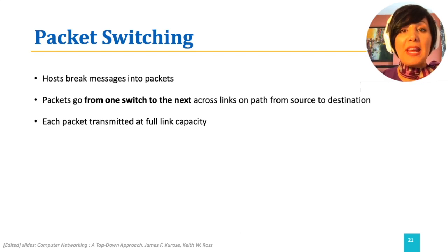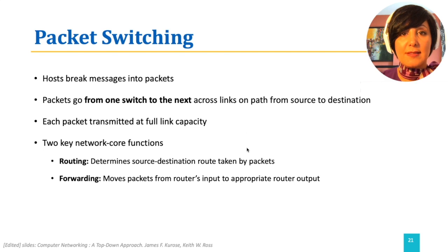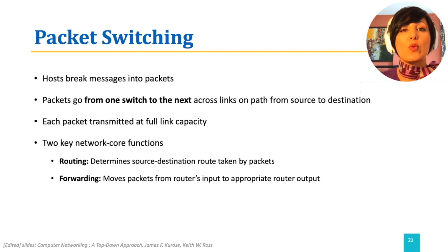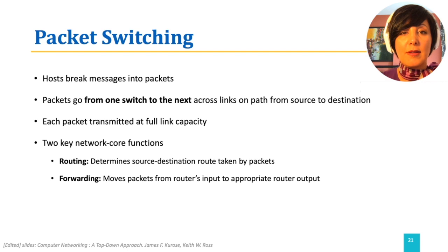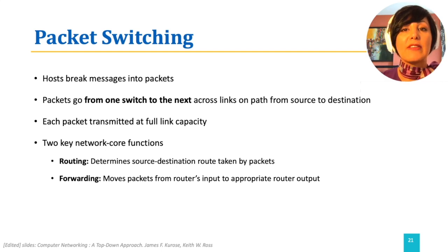There are two main network core functions: routing and forwarding. Routing determines the route or path between the source and the destination. Forwarding determines the movement of packets from the input of the switch or router to the output. Forwarding in switches is done based on tables that are calculated during routing.